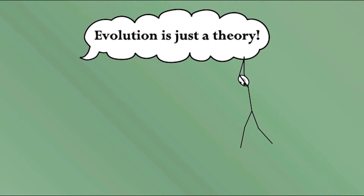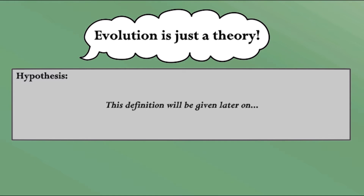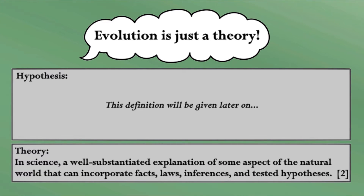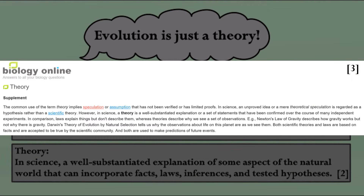The general meaning of the word theory is actually closer to the scientific term hypothesis. The scientific definition of the word theory is: a well-substantiated explanation of some aspect of the natural world that can incorporate facts, laws, inferences, and tested hypotheses. The common use of the term theory implies speculation or assumption that has not been verified or has limited proofs. In science, an unproven idea or mere theoretical speculation is regarded as a hypothesis, rather than a scientific theory. However, in science, a theory is a well-substantiated explanation of a set of statements that have been confirmed over the course of many independent experiments.